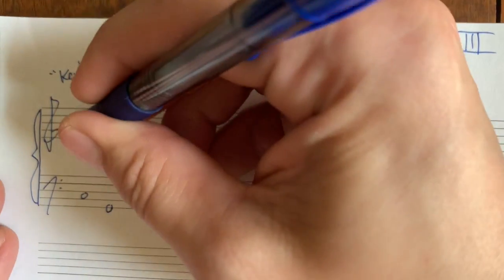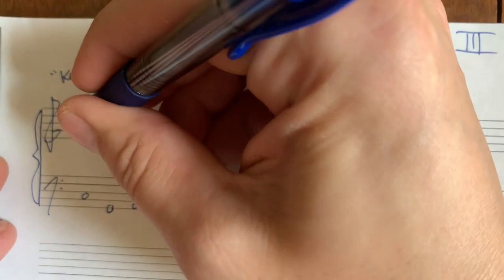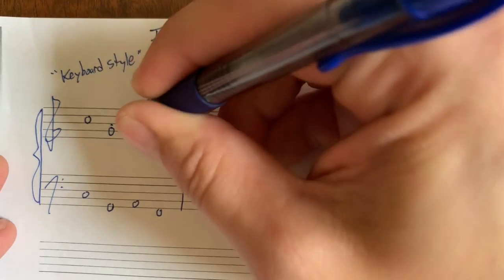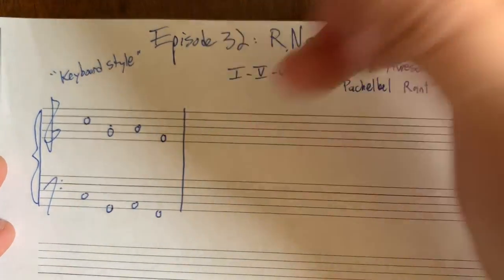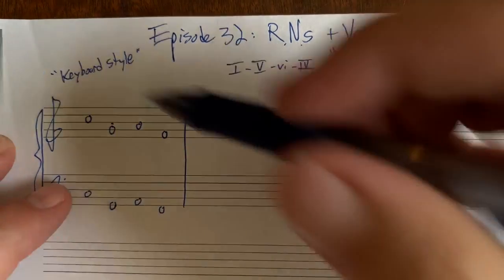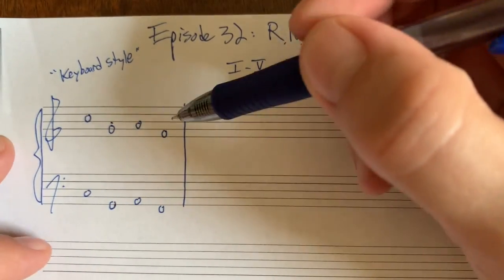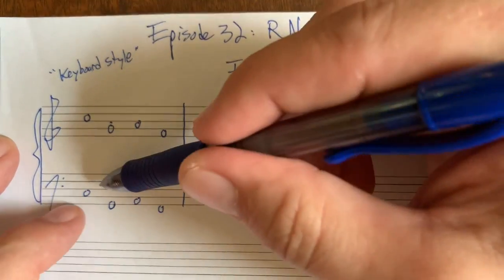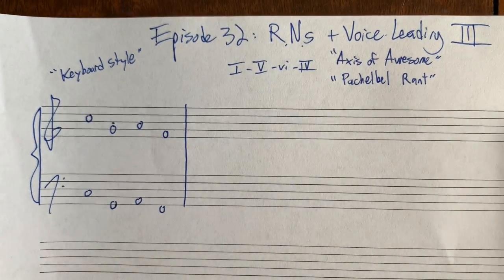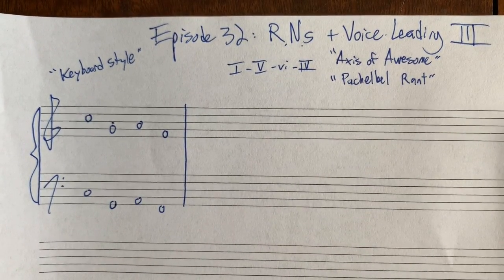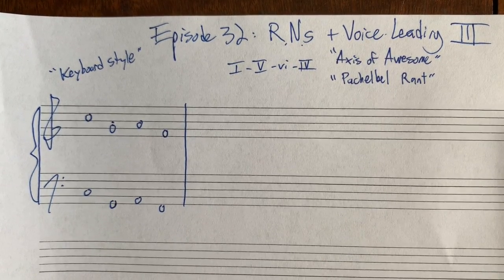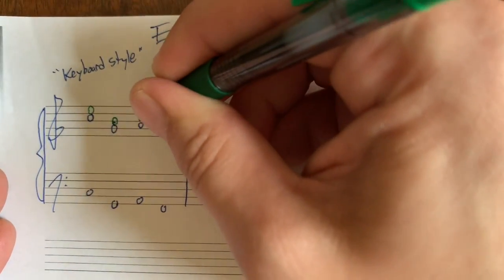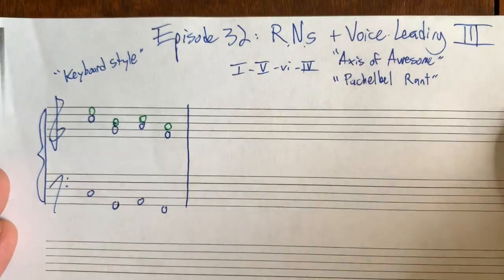Let's do what I'd consider kind of bad voice leading — just to start out with, let's have one of the notes do exactly what the bass does. You're going to find out that's a no-no. You don't want voices doing the exact same pitch class — they're both going C, G, A, F, though this one is two octaves higher. Then let's give all these chords a third and a fifth.